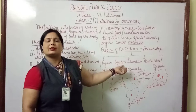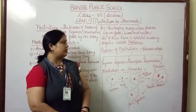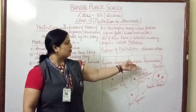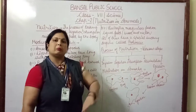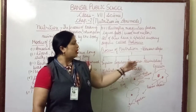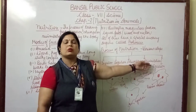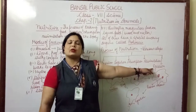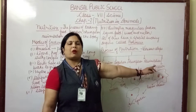Absorption means digested food is absorbed by our body and the digested food passes into the blood. Assimilation means the utilization of absorbed food by our body for the processes of growth, reproduction, and repair of our body. The last step is egestion — the removal of undigested food from our body is known as egestion.